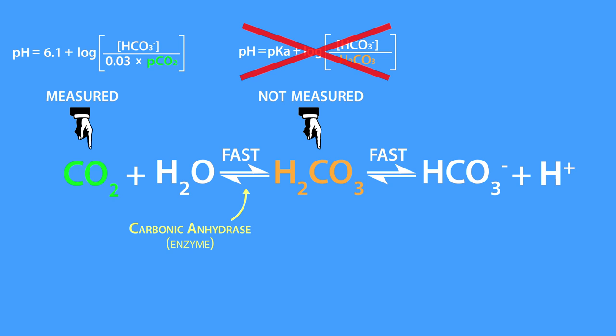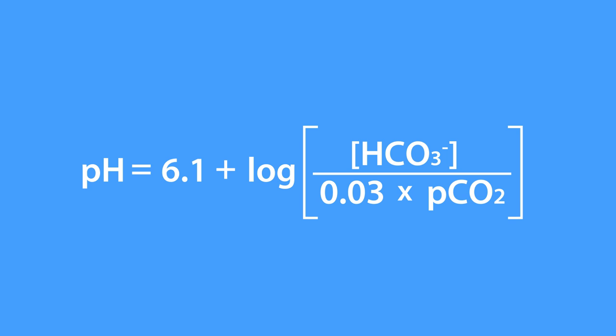Having said that, let's use the Henderson-Hasselbalch equation to estimate plasma pH. We'll use the normal plasma bicarbonate concentration of 24 millimoles per liter and a normal partial pressure of carbon dioxide of 40 millimeters of mercury. Doing so yields a normal plasma pH of 7.4.